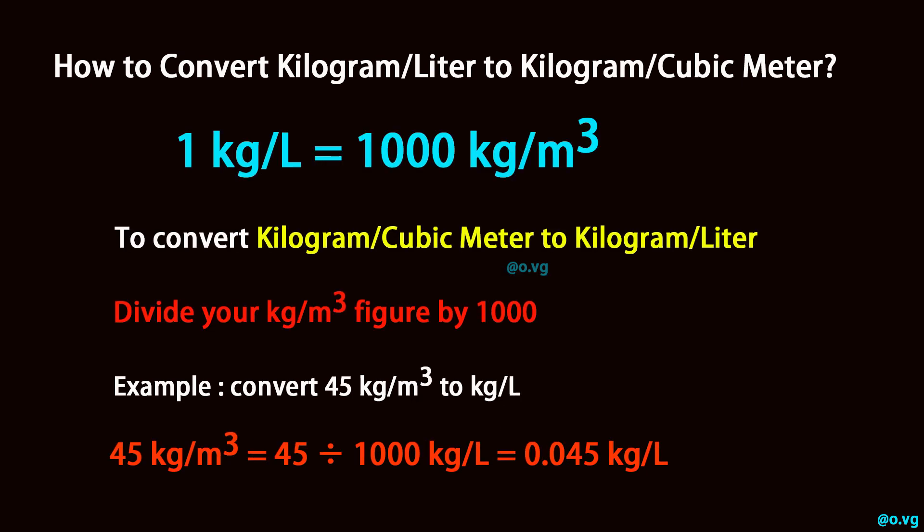To convert kg per cubic metre to kg per litre, divide your kg per cubic metre figure by 1000. Example: convert 45 kg per cubic metre to kg per litre. 45 kg per cubic metre equals 45 divided by 1000, which equals 0.045 kg per litre.